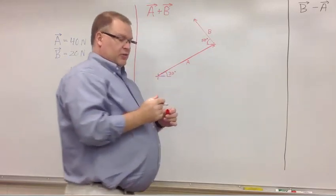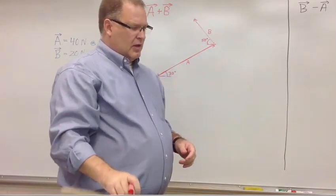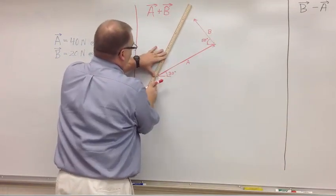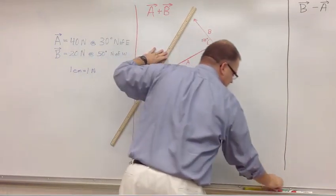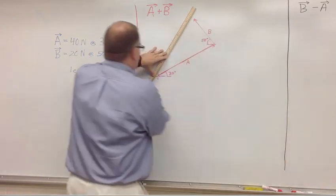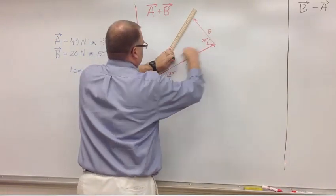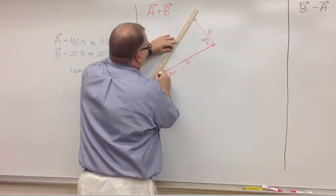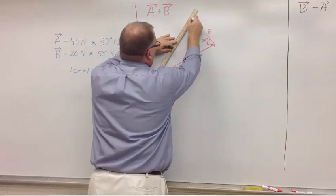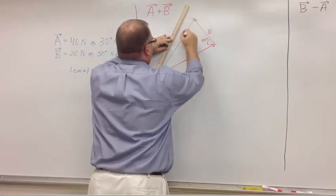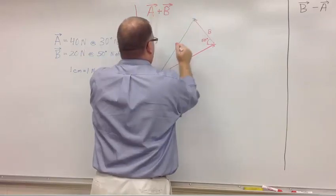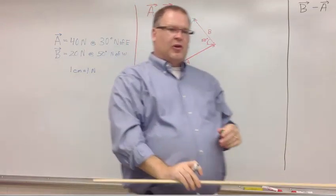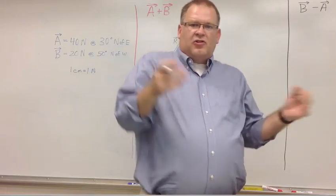So the resultant vector is the one that starts back at the origin and goes all the way to the end of vector B, of the second vector. Start at my original origin. Go all the way to the tip here. I use R for the resultant. You can use C. Just use a different letter.